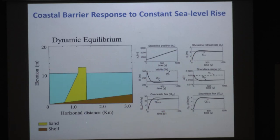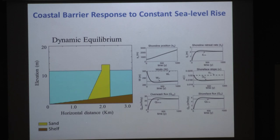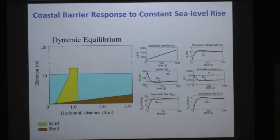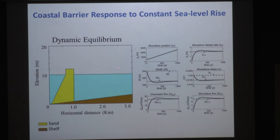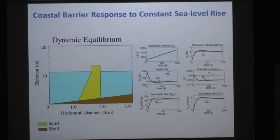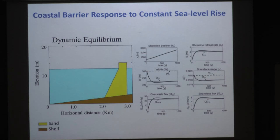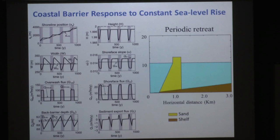During dynamic equilibrium, we start with the equilibrium geometry. Once sea level rise begins, the geometry adjusts to a rollover or dynamic equilibrium geometry — different from the initial equilibrium. After that point the geometry is maintained: we have sufficient overwash fluxes and a fast enough surface response rate to maintain the barrier geometry as it migrates landward.